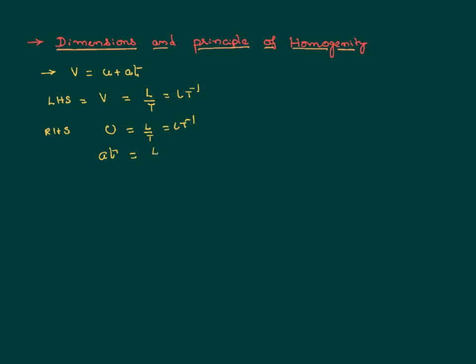The other term in the RHS is 'at'. Acceleration means velocity divided by time. Velocity is length by time, so acceleration is L/T². Multiplied by T, that gives LT⁻¹. So if you add the two terms of the RHS — u and at — both have dimensions LT⁻¹. I am not making a strict mathematical addition; I simply note that LT⁻¹ plus LT⁻¹ gives LT⁻¹.